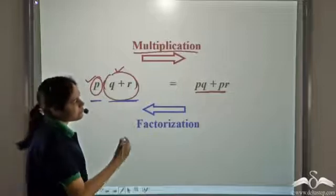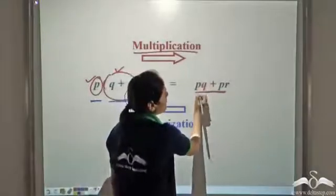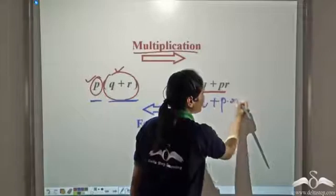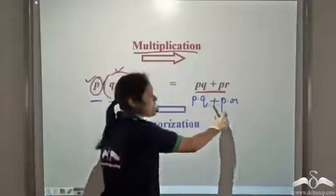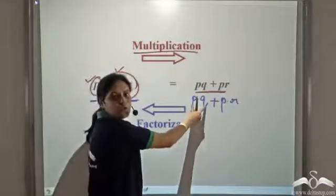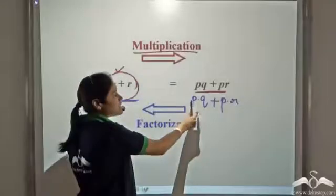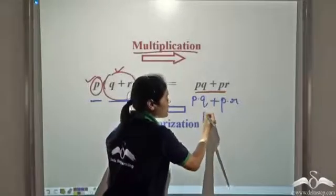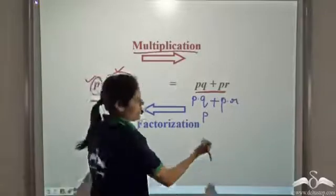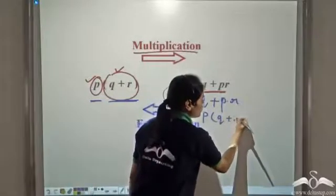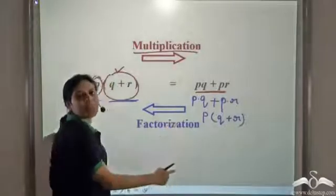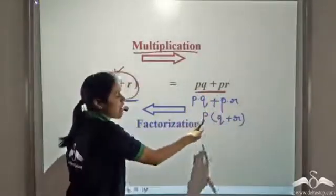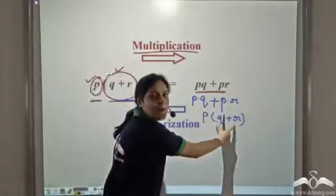How do we go about it? Observe that p is multiplied with q and p is multiplied with r, so p is a factor of pq and a factor of pr. We say that p is a common factor of pq and pr — p is common to both. We can write it as p into (q + r). This is the simplest method of factorization: taking the common factor of all terms outside and writing the remaining part within brackets.